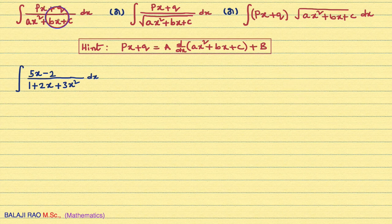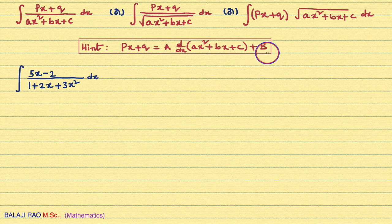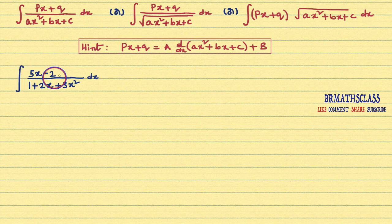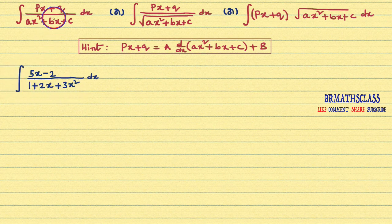What is that procedure? Initially, we will write px plus q as a into derivative of ax² plus bx plus c, plus b, and we will proceed. First, you identify which form this integral belongs to. You observe the numerator — it is in the form of px plus q. You observe the denominator: the square root is not there and the expression is of the form ax² plus bx plus c. So the given integral is of this form, and the procedure is the same for all three forms.